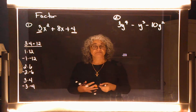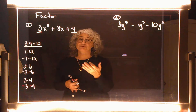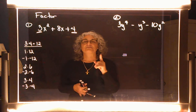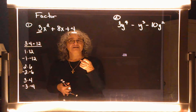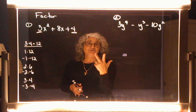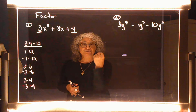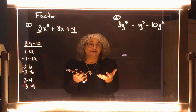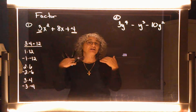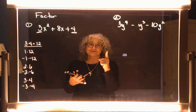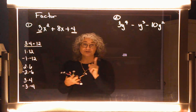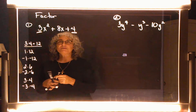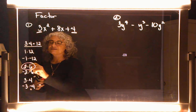Now remember, the whole reason you wrote these down is you're looking for a combination that multiplies to 12, but at the same time adds to the positive eight in the middle — because I need to replace the positive eight with two numbers that add to positive eight and multiply to 12. The combination that works is positive two and positive six.